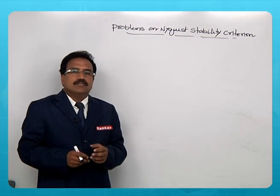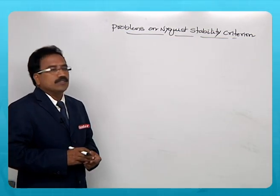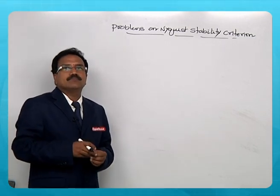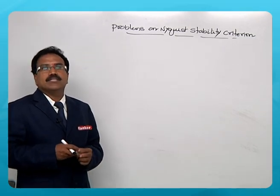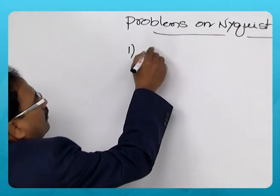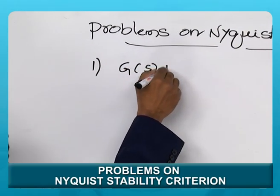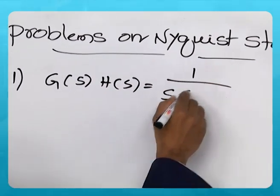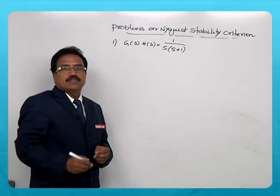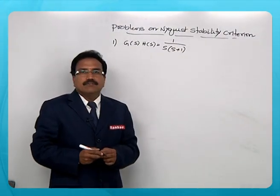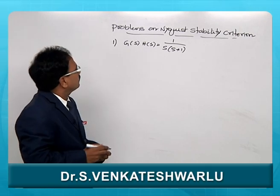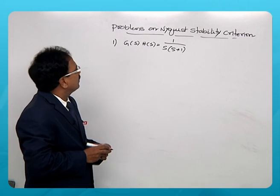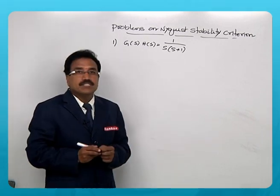Let us solve a few problems on finding the stability of a closed loop control system using Nyquist stability criteria. The given function G(s)·H(s) is equal to 1 / [s(s+1)]. Let us find the stability for this simple system, which has two poles: one at the origin and the other at minus 1, using Nyquist stability criteria.